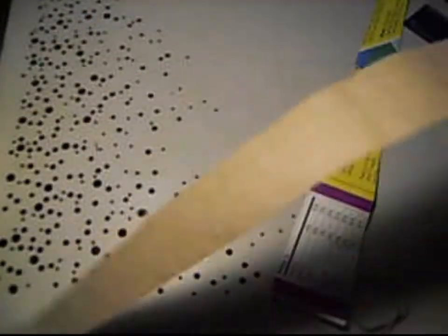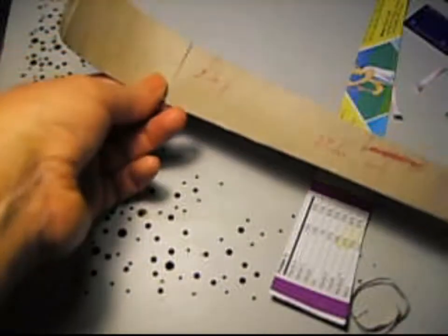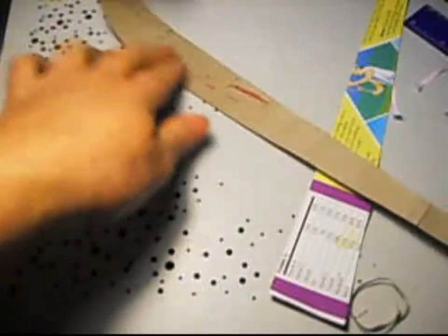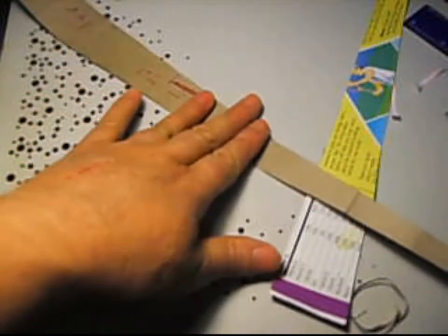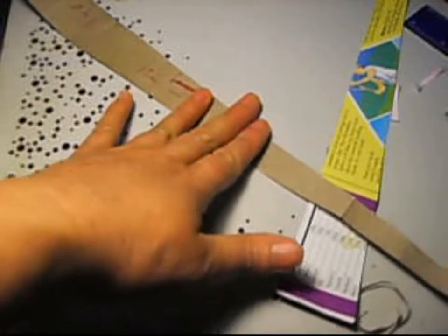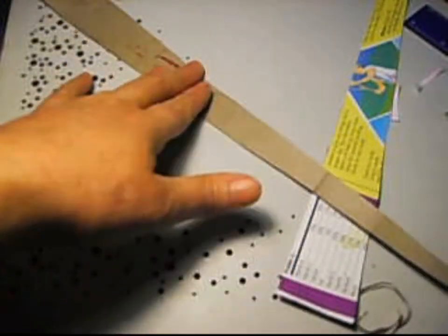Now we're going to use this strip to make a bead. And what you do, in case you guys don't like this brown color, you can use a marker.